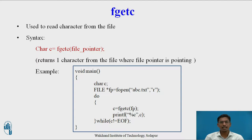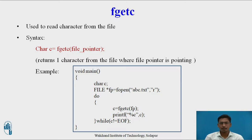The first function is fgetc. Here 'f' stands for file, 'get' stands for read, and 'c' stands for character. So fgetc is used to read one character from the file. The syntax is fgetc(file_pointer). The return type of this function is the character which is read from the file — it returns the character at the position where the file pointer is currently pointing.